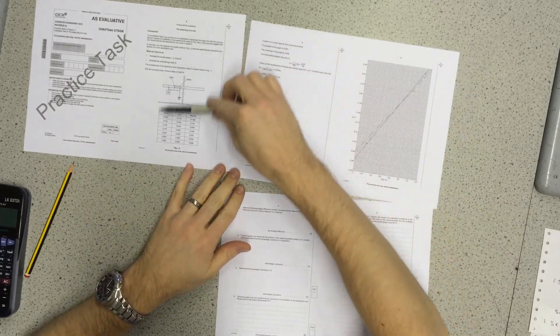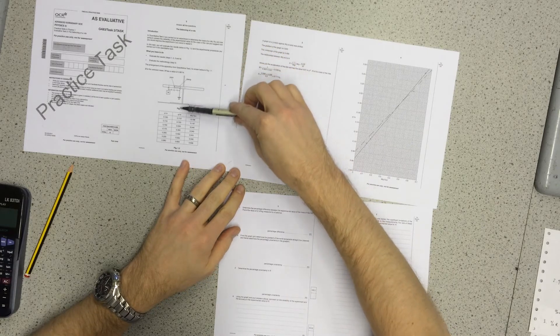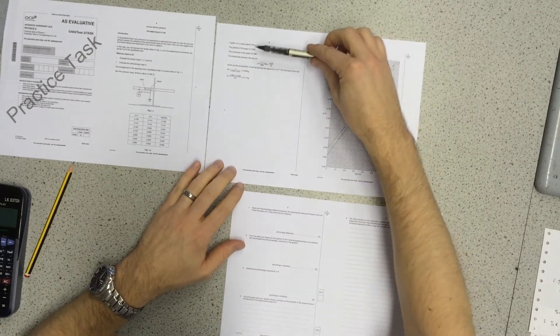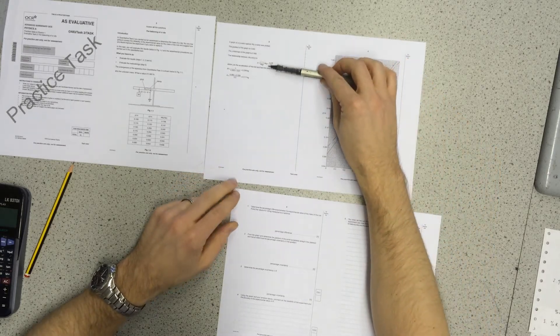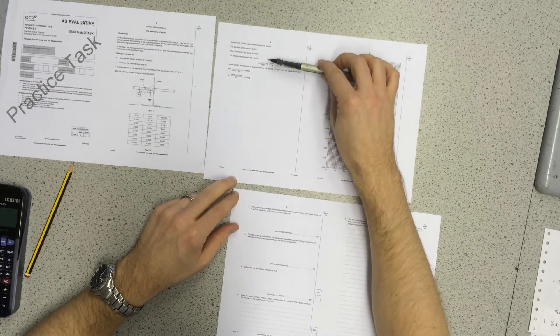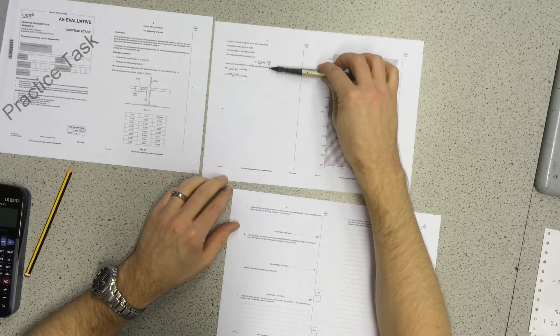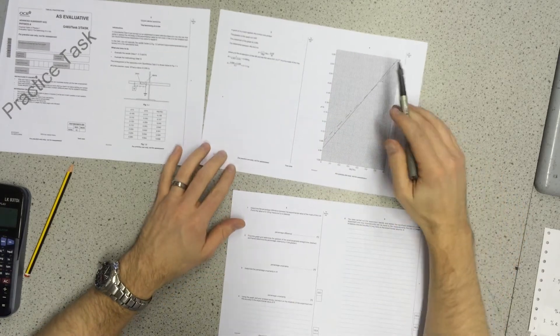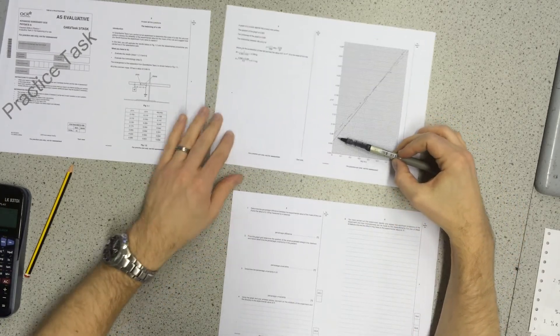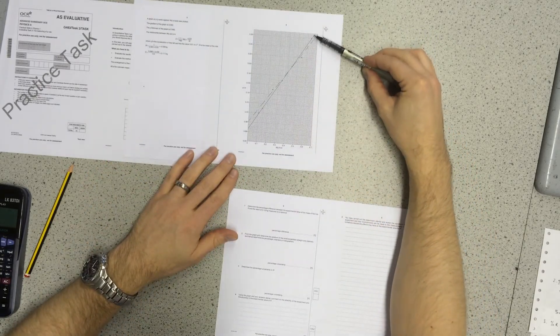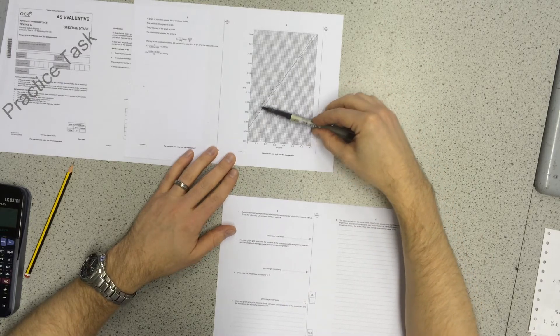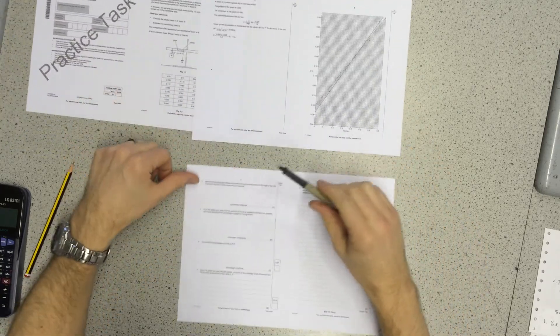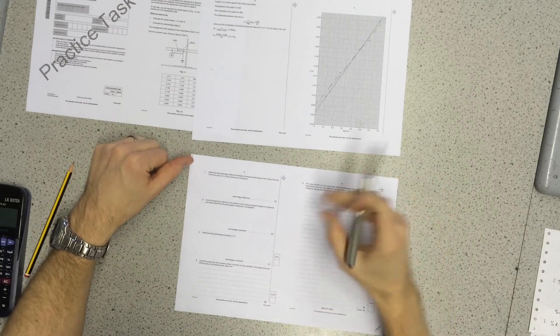We have an explanation of the practical with the diagram there and some data that was collected. We then have some other data here, including the gradient of the graph, the y-intercept of the graph, the equation that was given as part of the quantitative task, the value of g, the value of m and how it's calculated, the value of r and how it's calculated. We then have a graph. We're told that the solid line of the graph is the line of best fit. This dotted line is the worst acceptable line. We're going to go through the questions, one to four, which are the calculations and then commenting on the values.